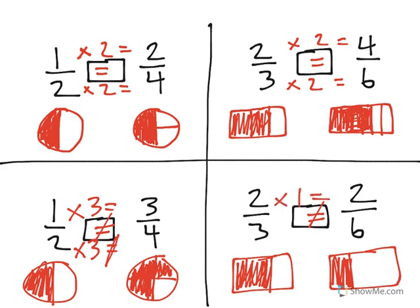Same thing over here. 2 times 1 would be equal to 2, but 3 times 1 is not 6.